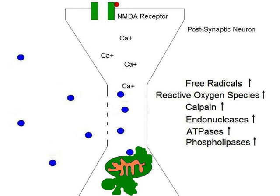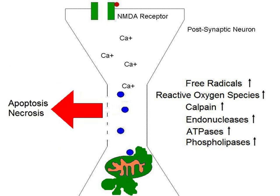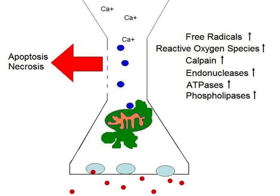The caspase-dependent apoptosis cascade is initiated, leading to apoptosis. If the cell dies through necrosis, however, it releases glutamate and toxic chemicals into the environment around it. The original influx of calcium can also cause the release of more glutamate, which then causes nearby neurons to repeat the same cycle.